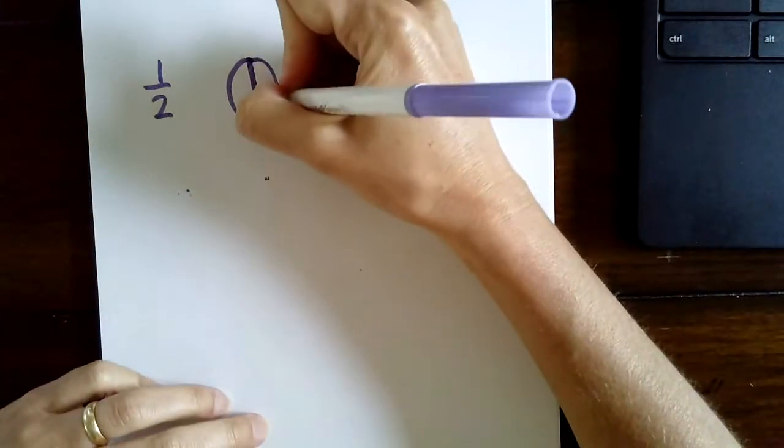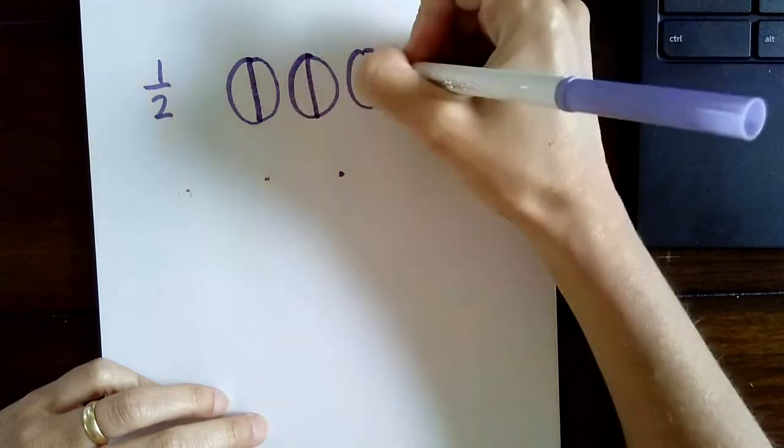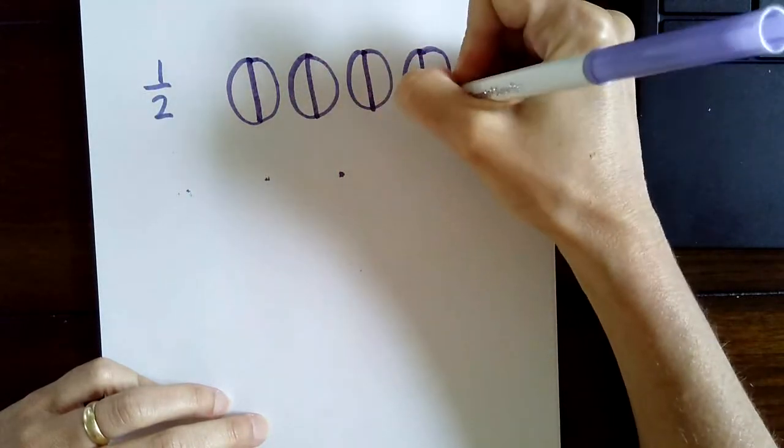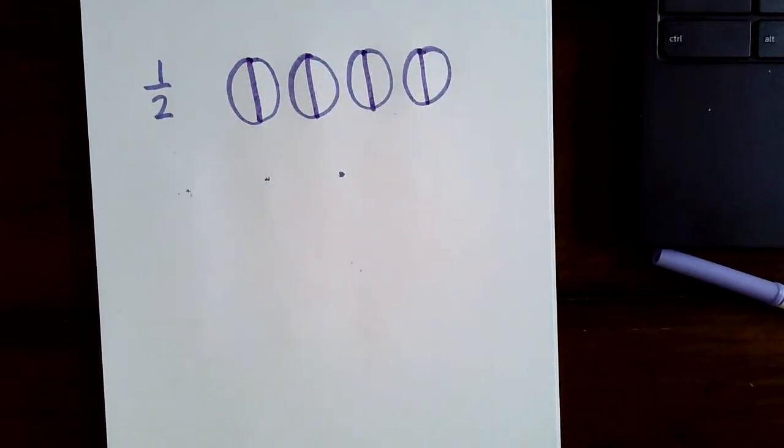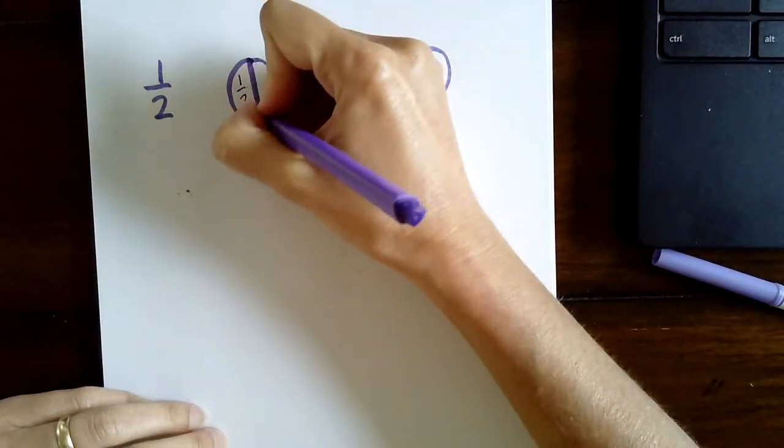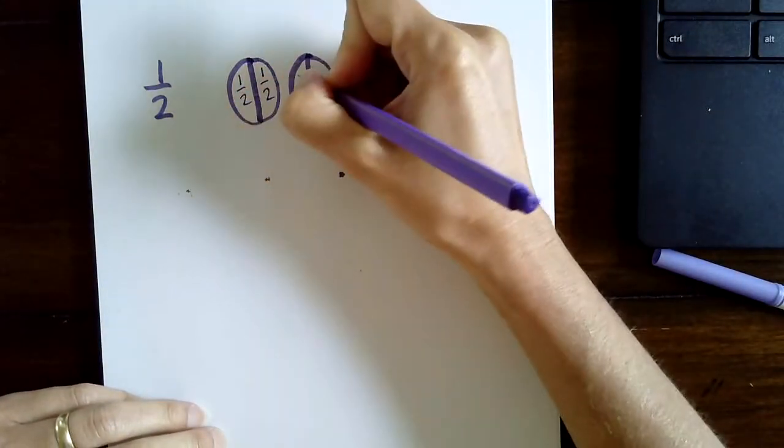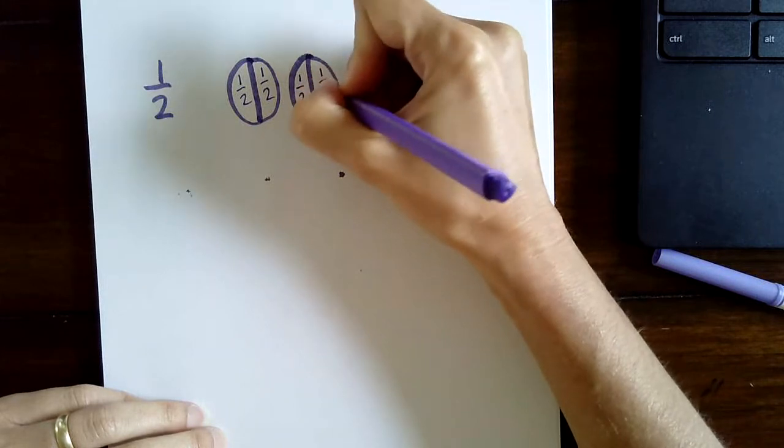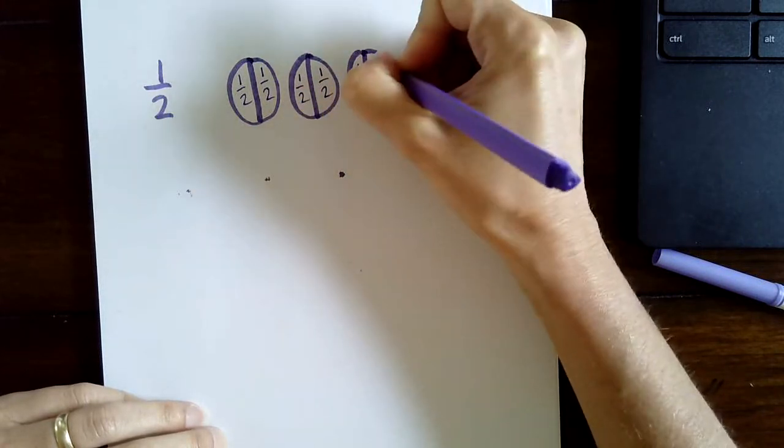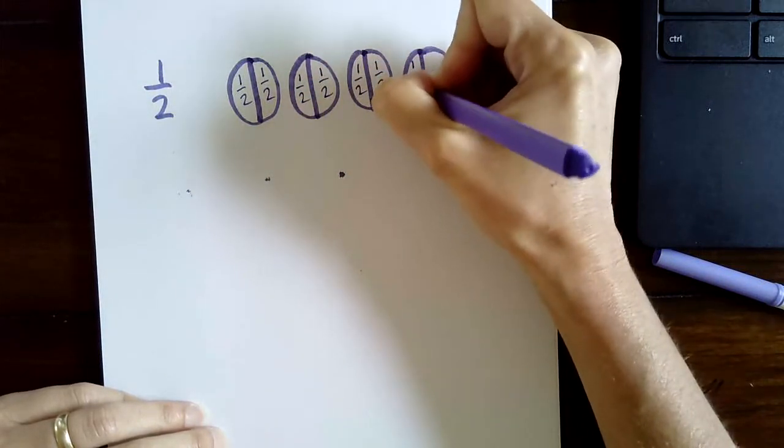And that's pretty easy. And of course, next we're going to do our labeling. Label each fractional unit. Each piece is one half.